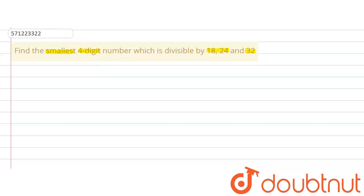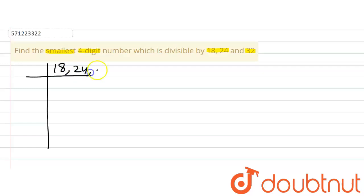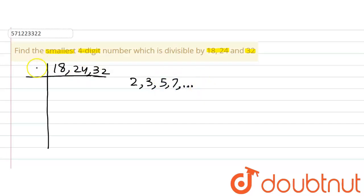First of all we are going to find out the LCM, so let's proceed. To find the LCM, let's write down the given numbers: 18, 24, 32. For the LCM, we are going to use prime factors — 2, 3, 5, 7, up to 11 and so on — and divide these numbers by these prime factors until we get 1, 1, 1.